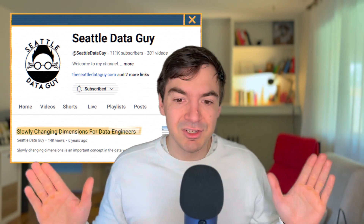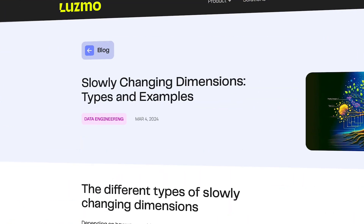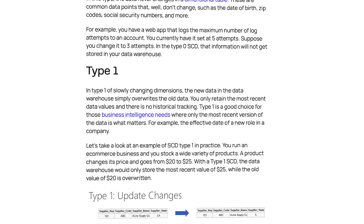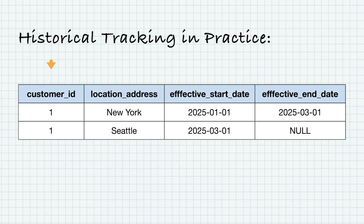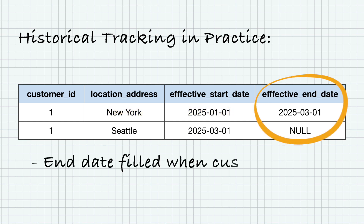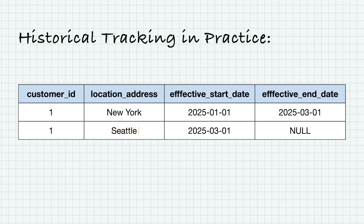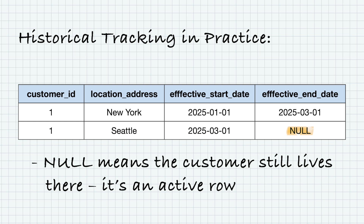I've done videos on slowly changing dimensions several years ago, but there are several types — Type 1, Type 2, Type 3, etc. Personally, I've only seen Type 2 and Type 6. Type 2 is generally the most frequent. Going back to the New York and Seattle example: you basically have customer ID, the location they live, and a start and end date. So you have customer ID 1, New York, start date 2025-01-01. The end date will be filled if they've moved, and null if they haven't. So if they moved on 2025-03-01, that row covers that range. The next row is Seattle for the same customer ID starting 2025-03-01, with the end date null — that null essentially signifies this is still an active row.